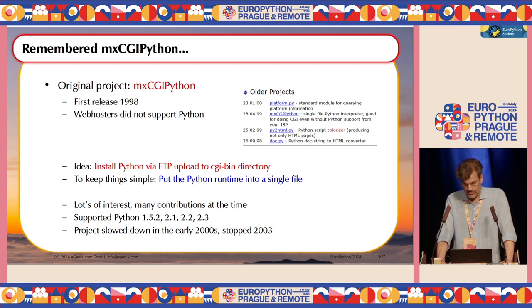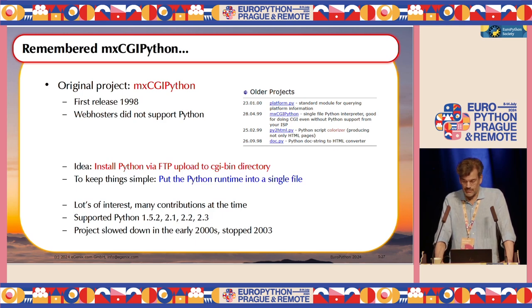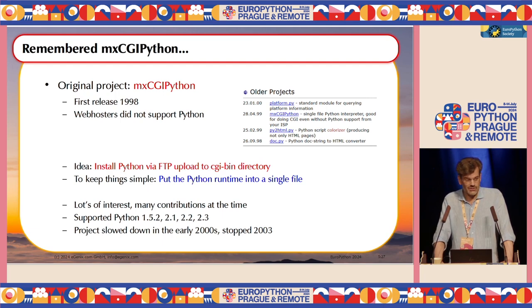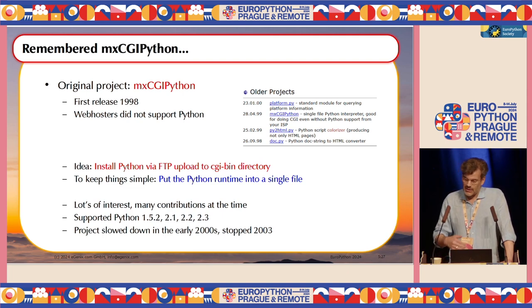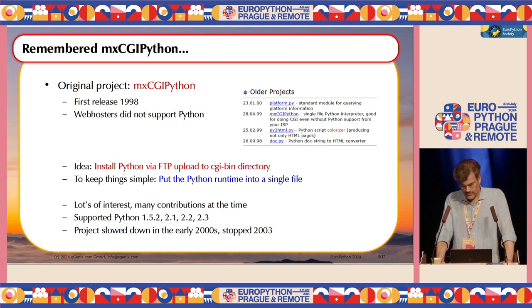In those days Python was not as popular as it is nowadays, so pretty much all the web servers you could rent only supported Perl and maybe shell scripts. We wanted to put Python there, so we wrapped Python up into a single file, uploaded it, used a shell script to make it executable, and put it into the CGI bin directory to have Python as a runtime. This actually worked — we kind of hacked ourselves into the webhoster. Lots of people thought it was a great idea and we got lots of help for various Unix platforms. After a while, webhosters started supporting Python natively, so we didn't have to support MXCGI Python anymore.